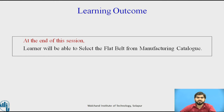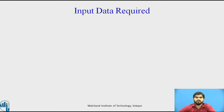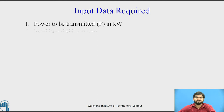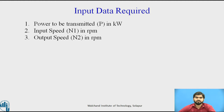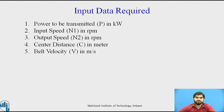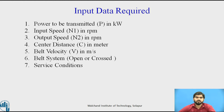The learning outcome of this session is that at the end of this session, the learner will be able to select the flat belt from the manufacturing catalog. There are 8 input data parameters we require before we design the flat belt: first, power to be transmitted; second, input speed; third, output speed; fourth, center distance between two shafts; belt velocity; belt system — whether open belt or cross belt; service condition — for which application the belt drive is used; and eighth, manufacturing data.